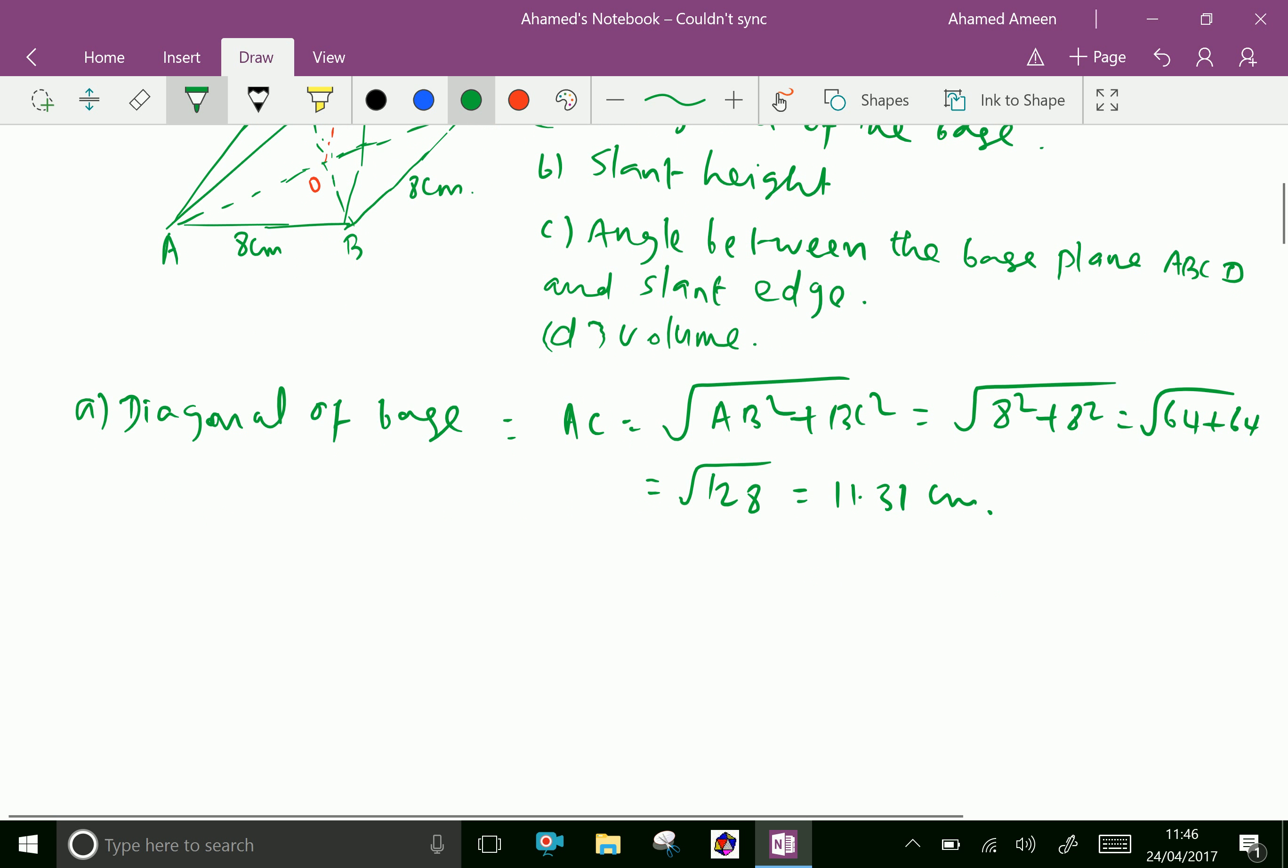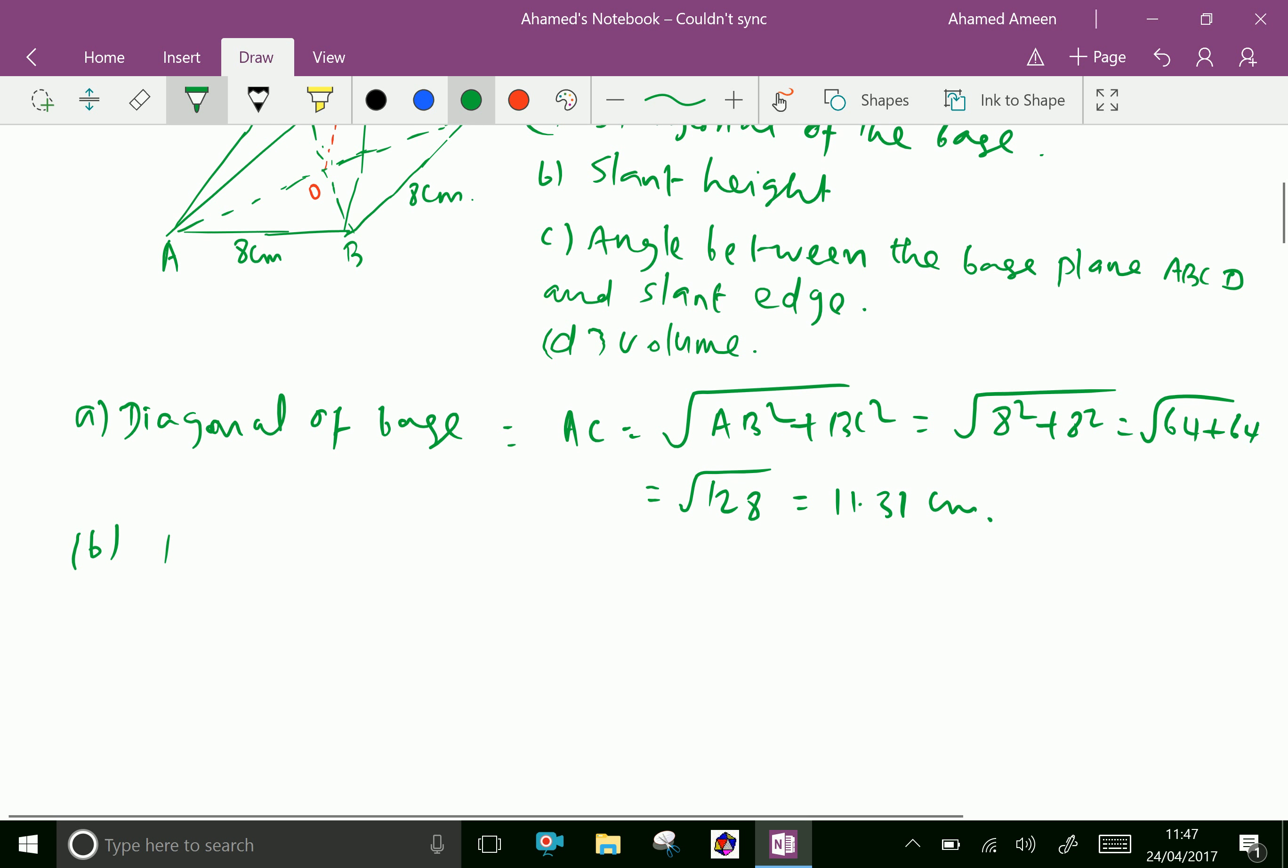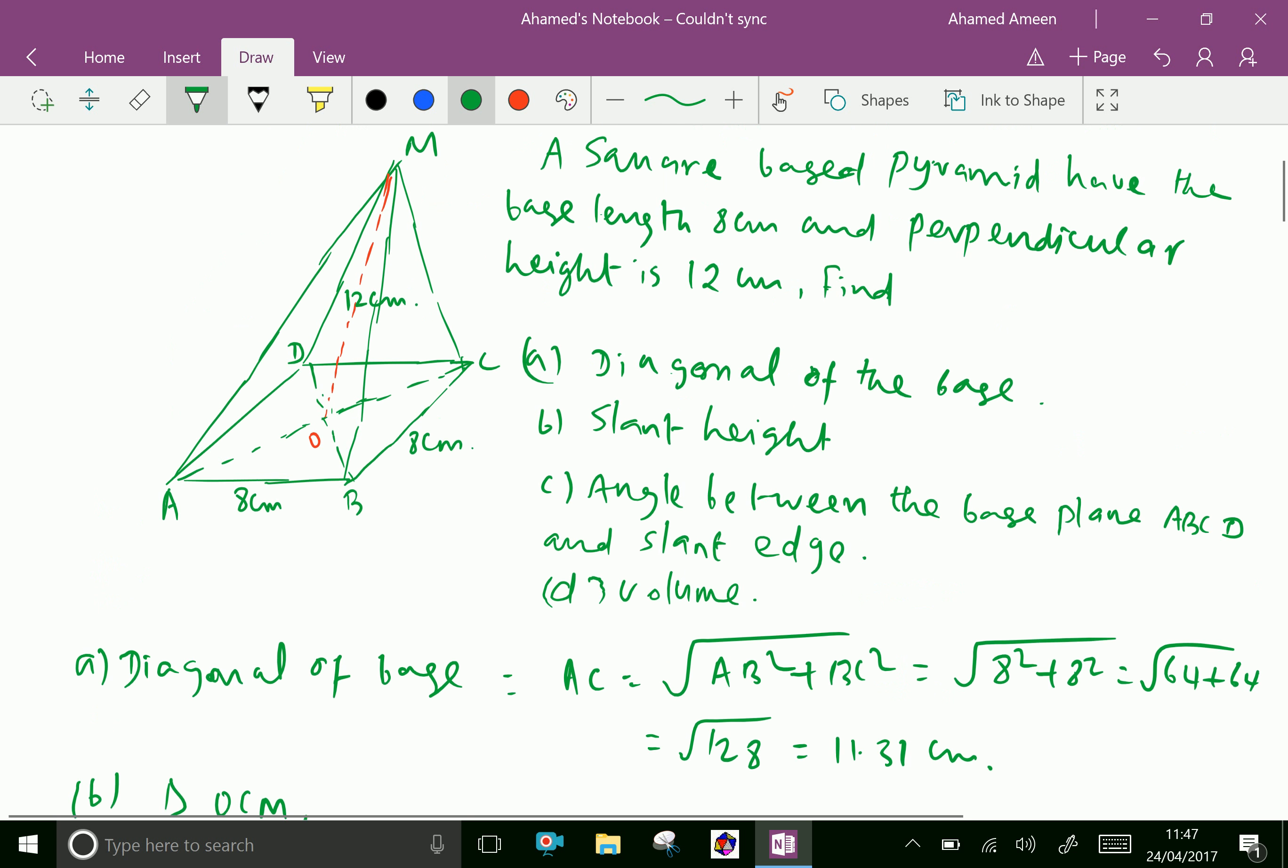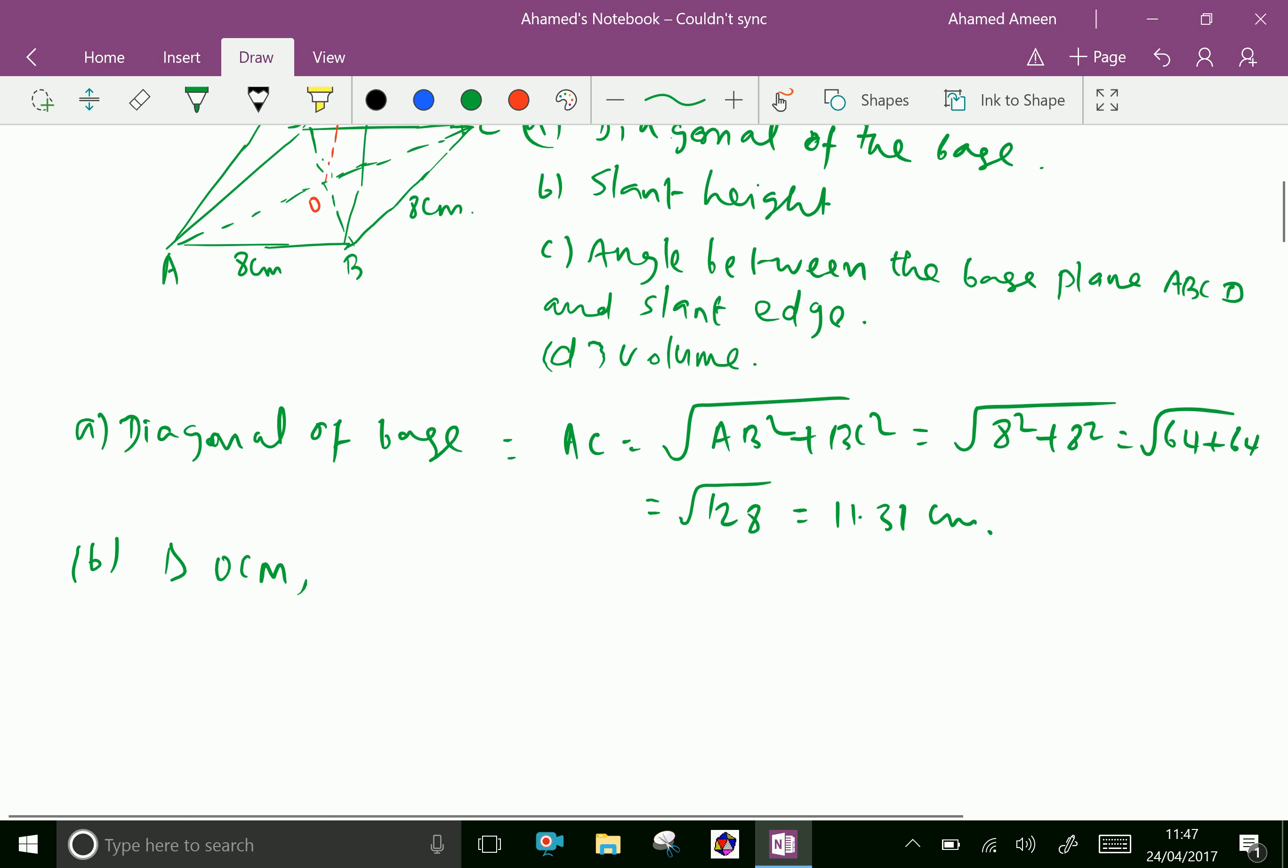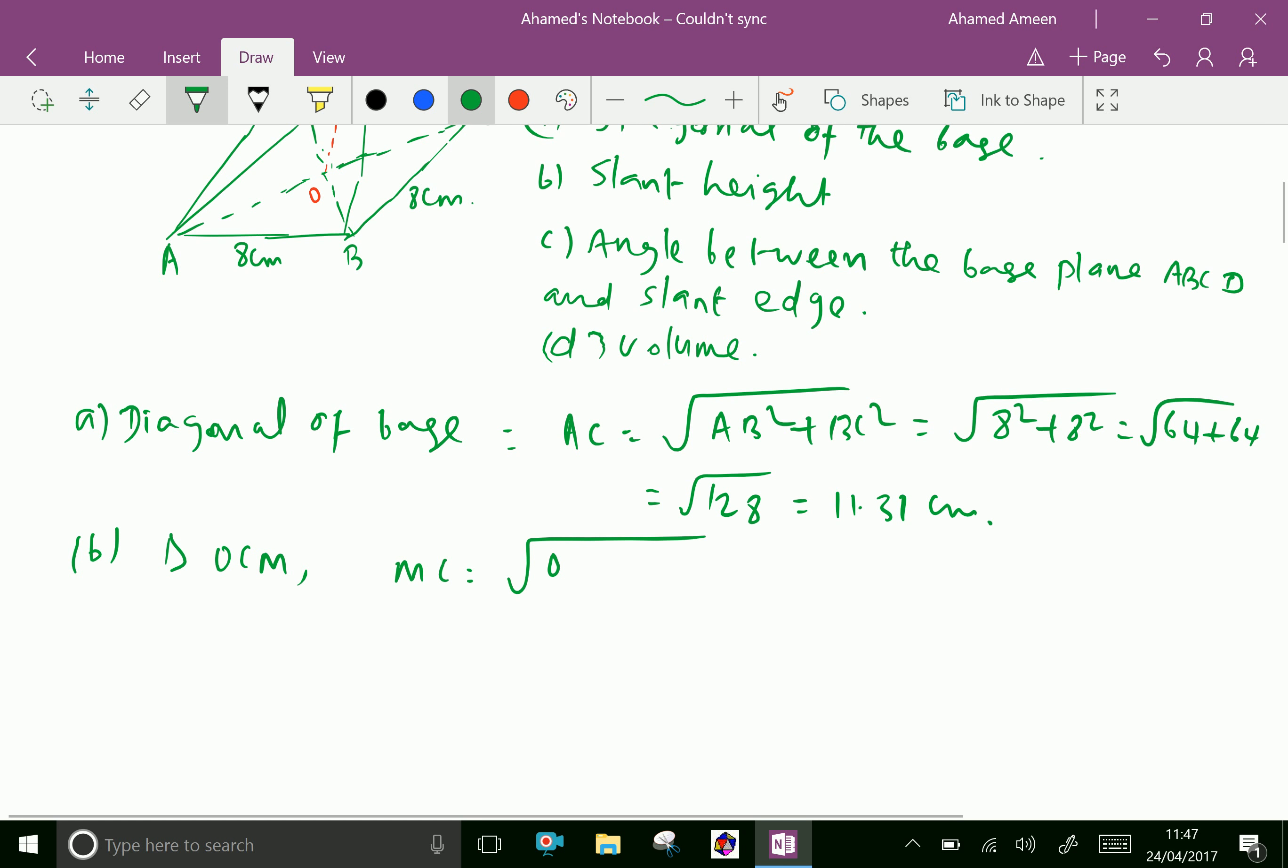Now the slant height. The slant height is MC. Here in triangle OCM, MC equals square root of OC squared plus OM squared.